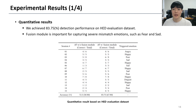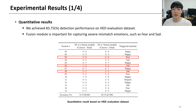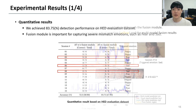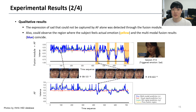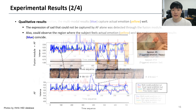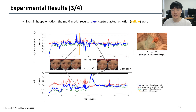We achieved about 83% detection performance on the HED evaluation dataset. The fusion module is important to capture severe mismatch emotions such as fear and sadness. We found that the expression of sadness that could not be captured by AF alone was detected through the fusion module. The surprising result confirmed that the actual emotion (yellow part) and the fusion result (blue part) actually matched. Even in happy emotion, we can see that the multimodal results capture actual emotion well.